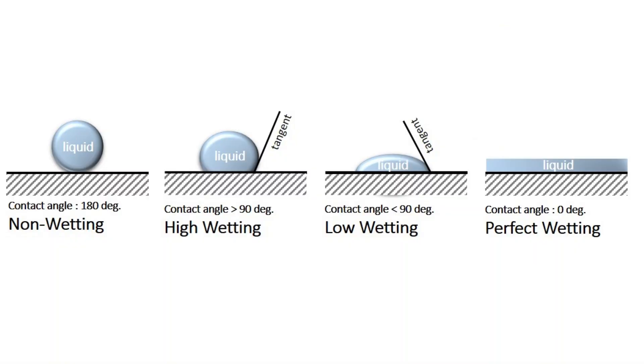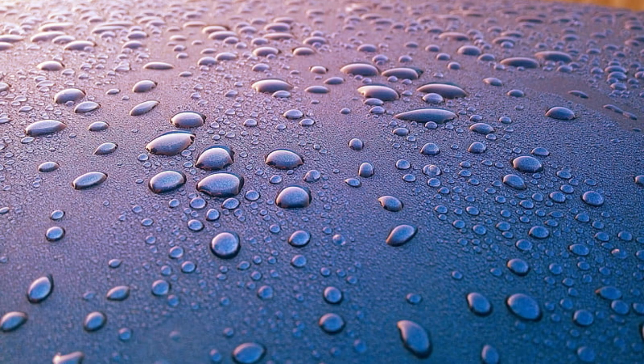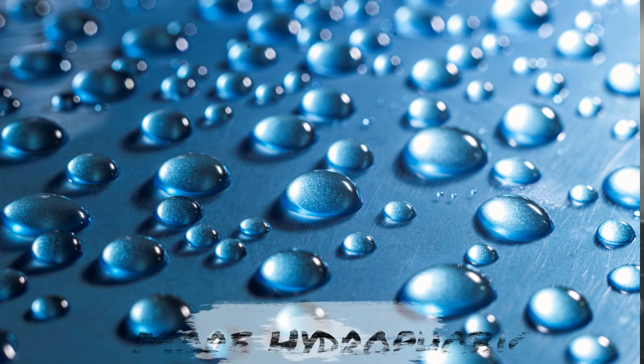Wettability is simply how water behaves on a surface. It determines whether water spreads out or beads up into droplets. On hydrophilic surfaces, water loves to spread. On hydrophobic surfaces, water avoids contact and forms droplets.